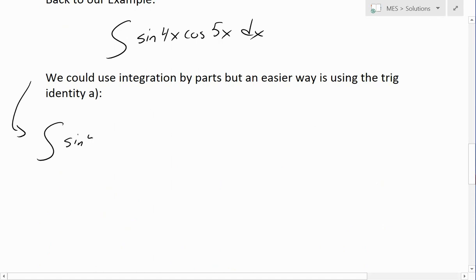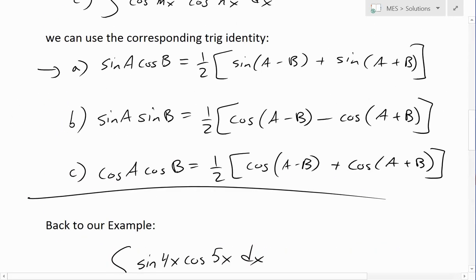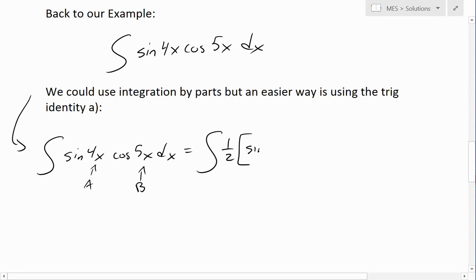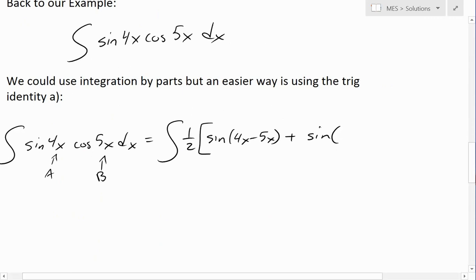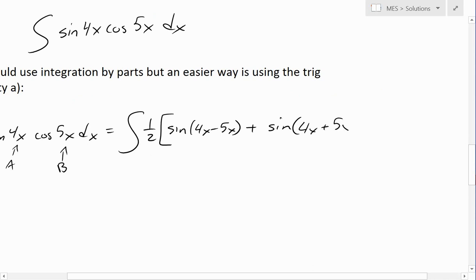So if we apply that, we get sine 4x cos 5x dx. Now this could be our A, this is our B, so 4x and this is 5x. This equals integral of 1 half, sine A minus B. So sine, now we have 4x minus 5x, that's A minus B, plus sine, now we have the addition, so we have 4x plus 5x, and this is all dx.